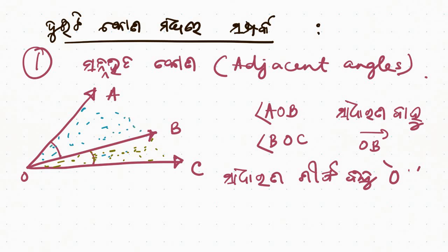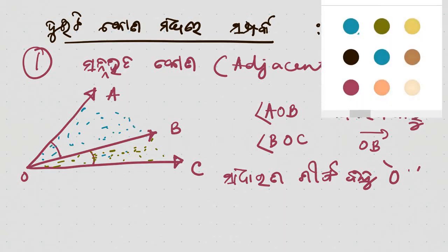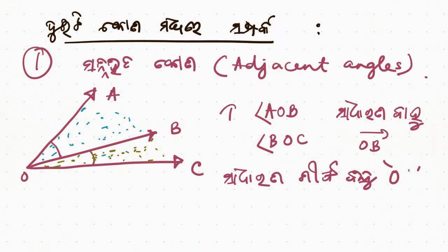But when you put the move in the condition, the first condition is A, O, B, and the second condition is A, O, B, and the third condition is A, O, B.